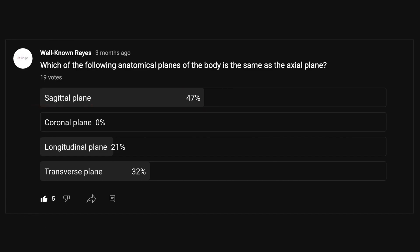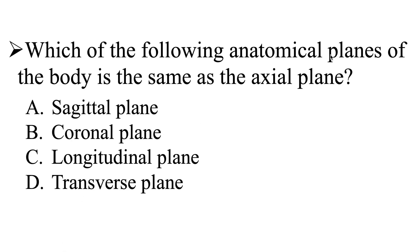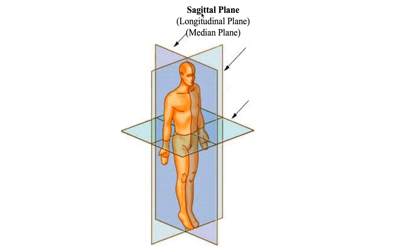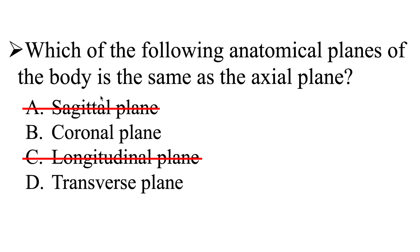We're wanting to see which anatomical plane is the same as the axial plane. The first one we have is the sagittal plane. This one is going to run right down the medial line, so it's also known as the median plane as well as the longitudinal plane. It is the one that is going to separate the body into left and right halves. So we can go ahead and get rid of the sagittal plane as well as the longitudinal plane, because the longitudinal plane is the same thing as the sagittal plane.